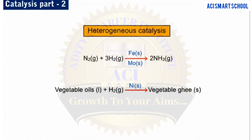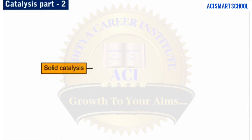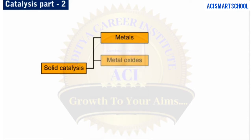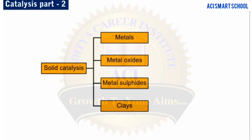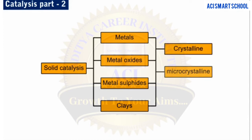From the earlier discussions, you are already aware that most heterogeneous catalysts are solids and that they can act on substrates in a liquid or gaseous reaction mixture. These solid catalysts may be metals, metal oxides, metal sulfides, or clays. They may be used in their pure form or in the form of their mixtures. Further, they may be crystalline, microcrystalline — that is, in the form of fine particles — or amorphous.